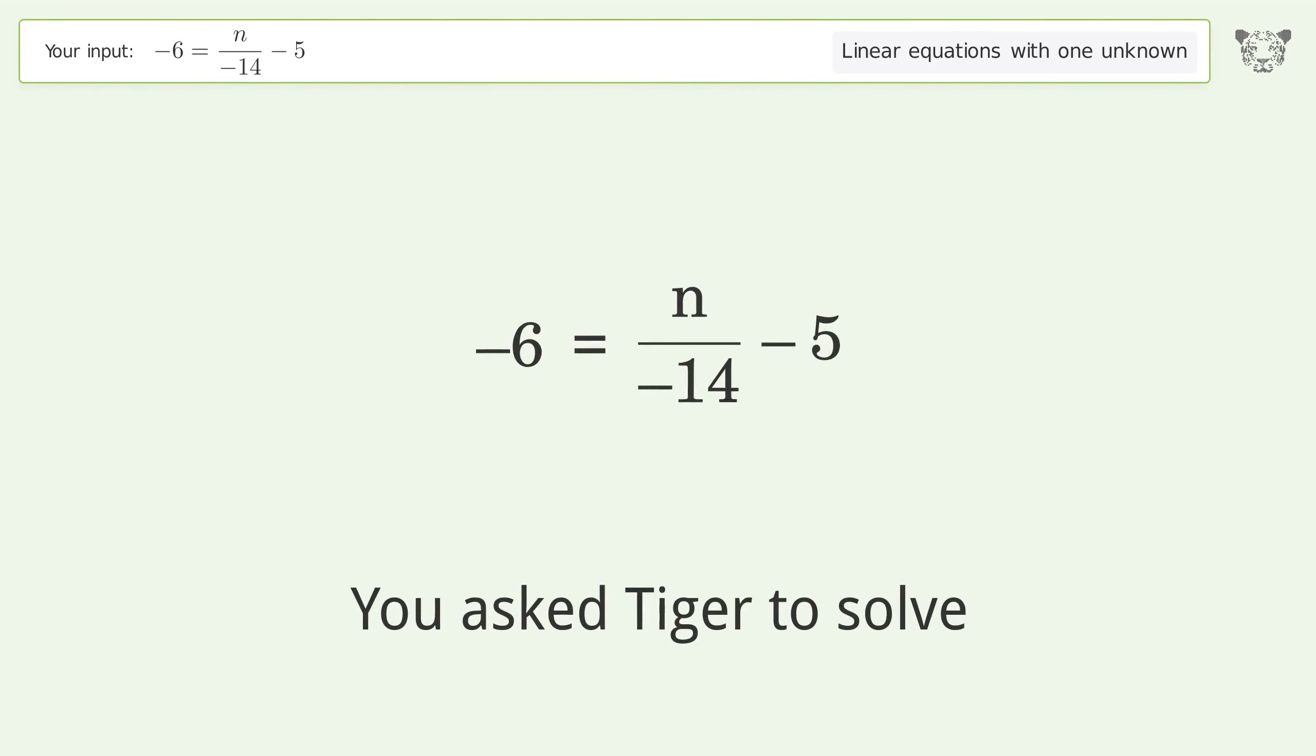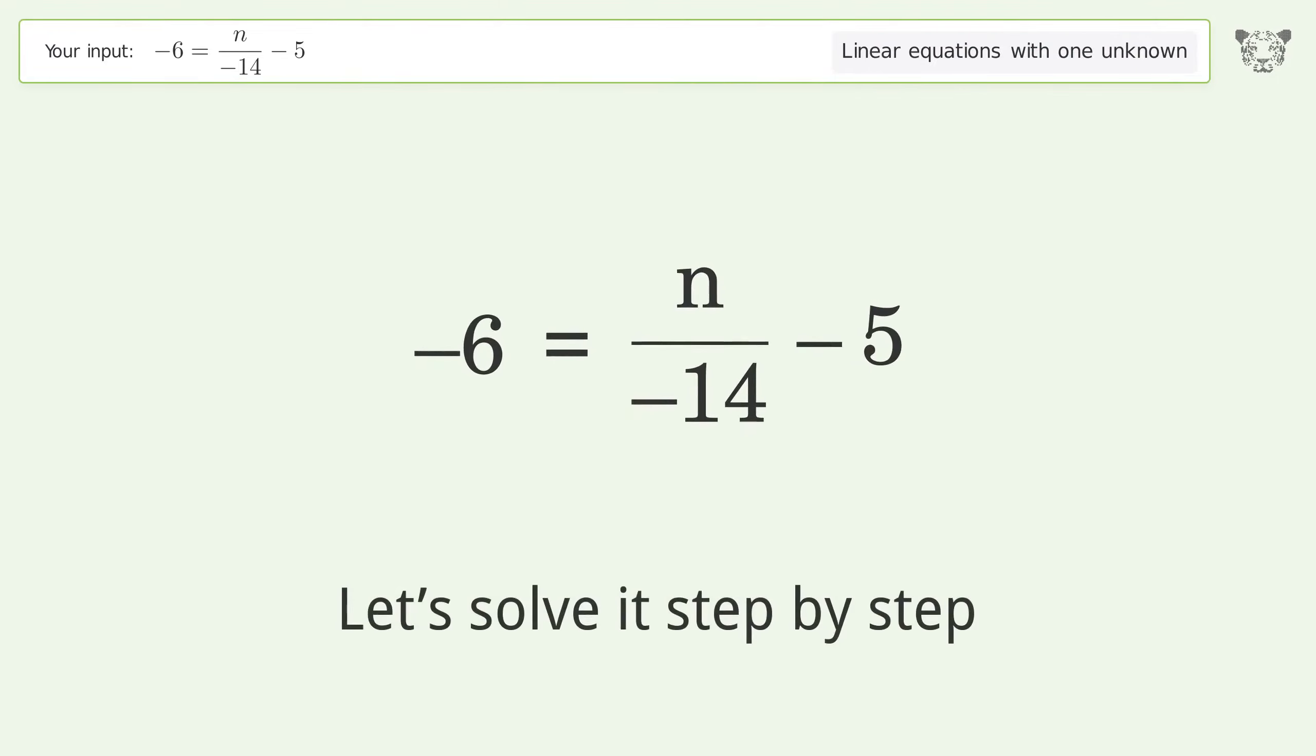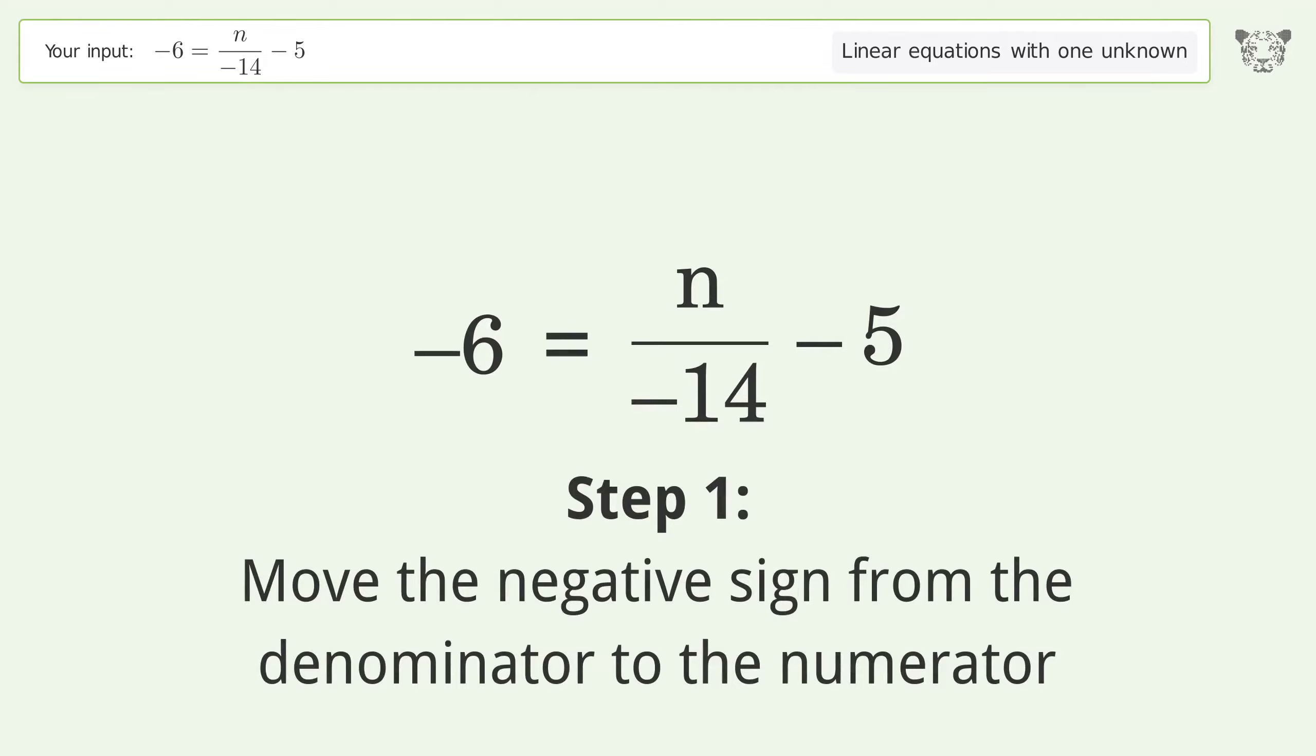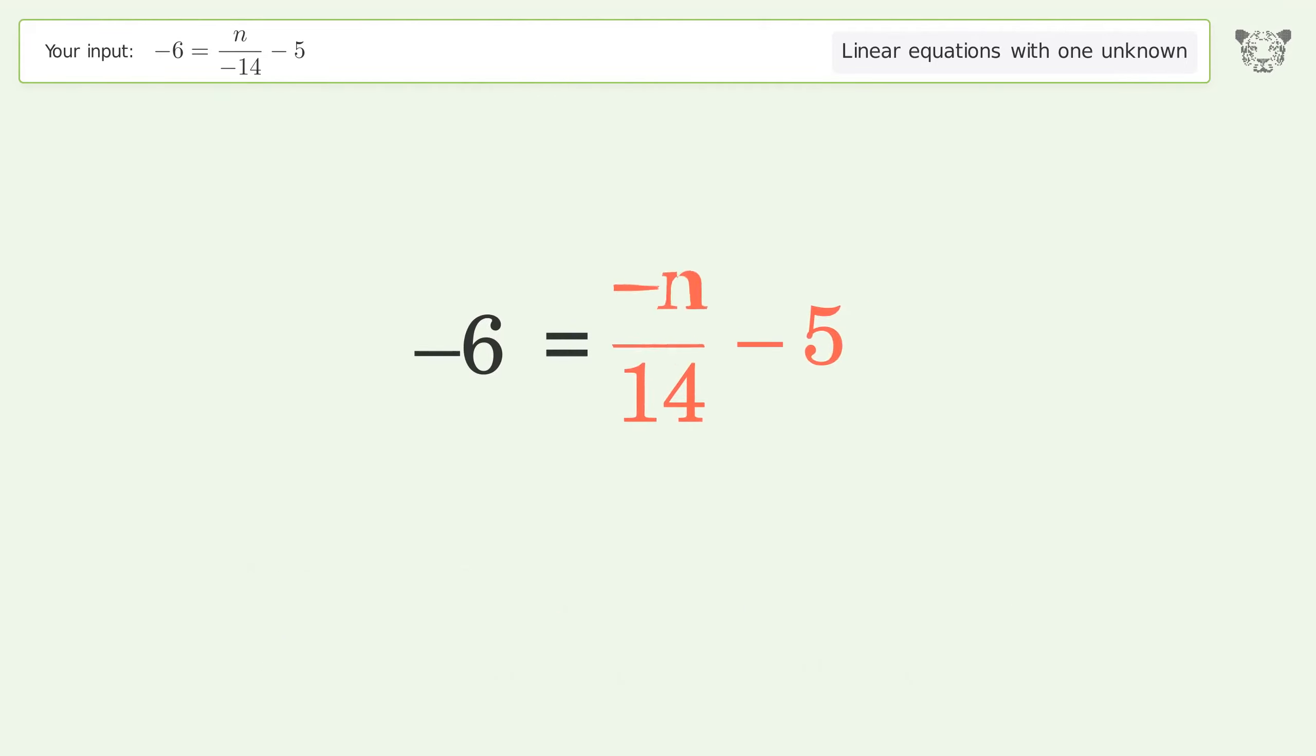You asked Tiger to solve this. This deals with linear equations with one unknown. The final result is n equals 14. Let's solve it step by step. Move the negative sign from the denominator to the numerator. Swap sides.